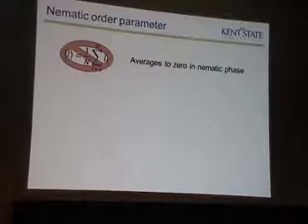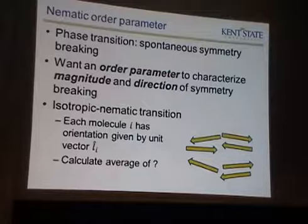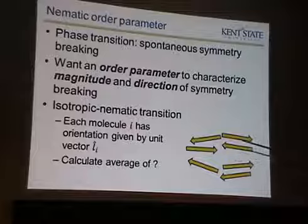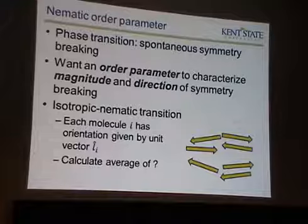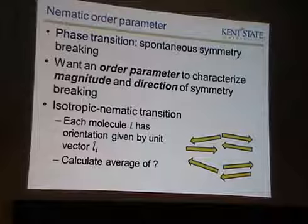It's a good guess, but this thing always averages to zero. It's wrong because it doesn't provide any information about the nematic phase. The average of these vectors is approximately zero, because half of them are pointing right and half of them are pointing left. So it averages to approximately zero in the isotropic phase, and it averages to approximately zero in the nematic phase. It doesn't tell you anything about whether you're in the isotropic phase or the nematic phase — nice try, but it doesn't work.